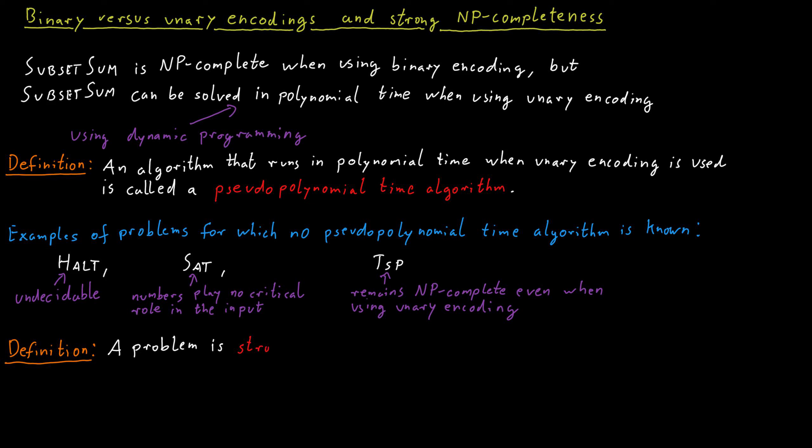And the definition is the following. A problem is strongly NP-complete if it is NP-complete, even if unary encoding is used. And so the traveling salesperson problem and satisfiability are strongly NP-complete problems, but subset sum is not.